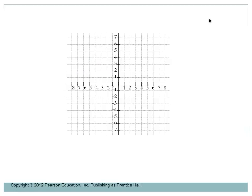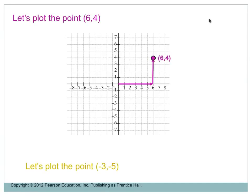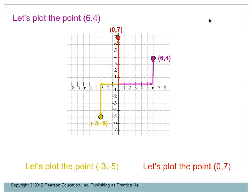We're starting with a typical rectangular coordinate system and we want to plot a couple of points. In purple we're going to plot point (6, 4), so on our x-axis we go over to 6 and up 4 — that's in the first quadrant. Point (-3, -5) is left 3 and down 5, in quadrant 3. Point (0, 7) goes up 7, right on the y-axis. Point (-6, 0) goes left 6 from the origin, right on the x-axis.